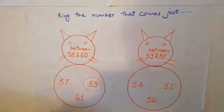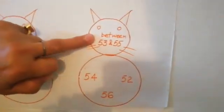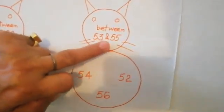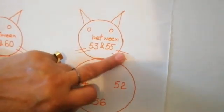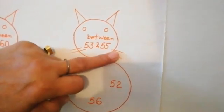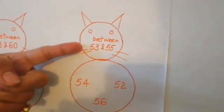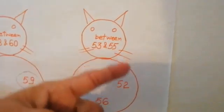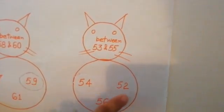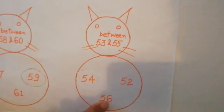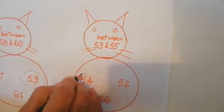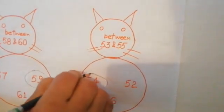Again between 53 and 55. What number comes between 53 and 55? 54, 52, 56. 54. We will circle.